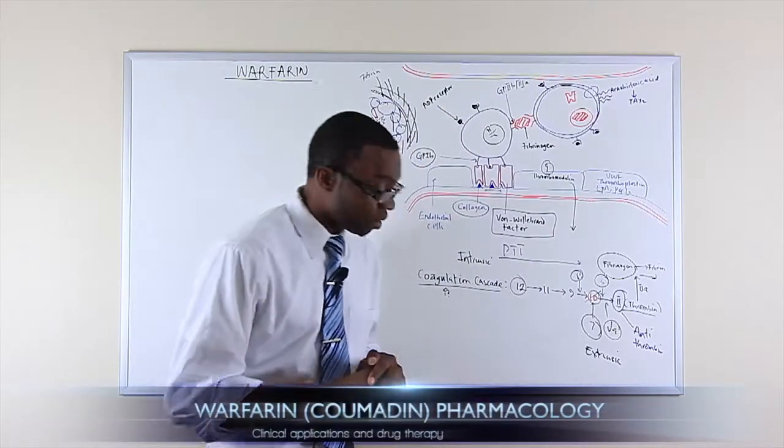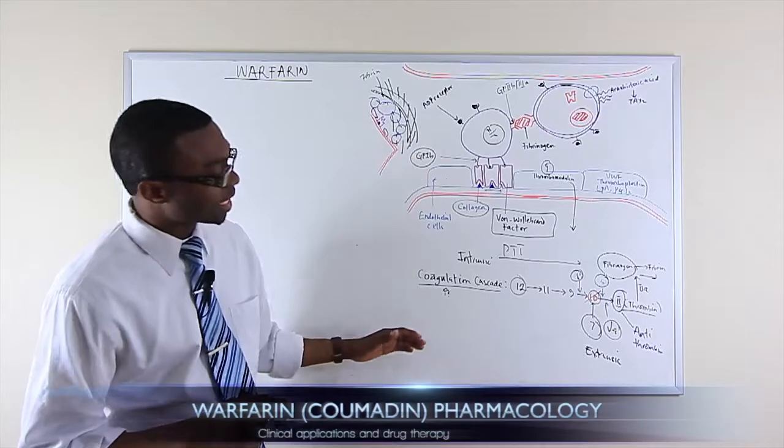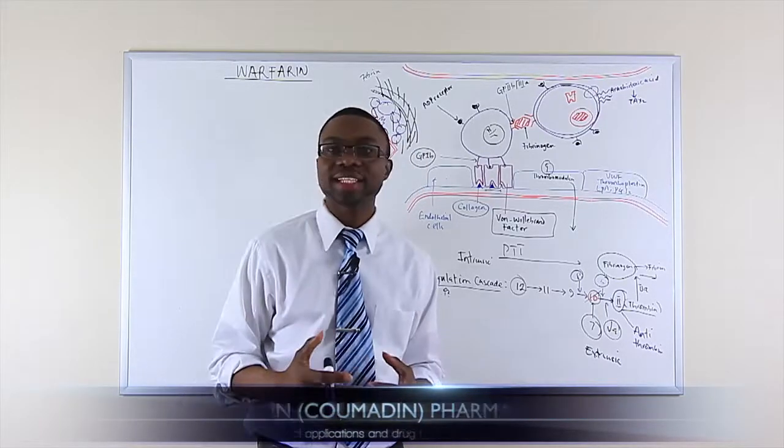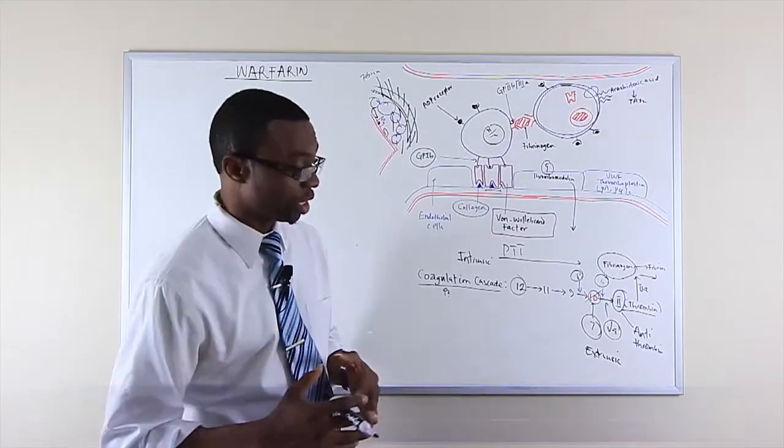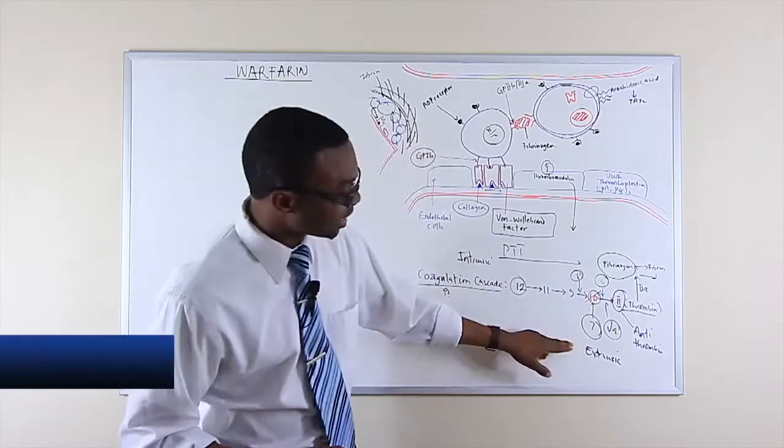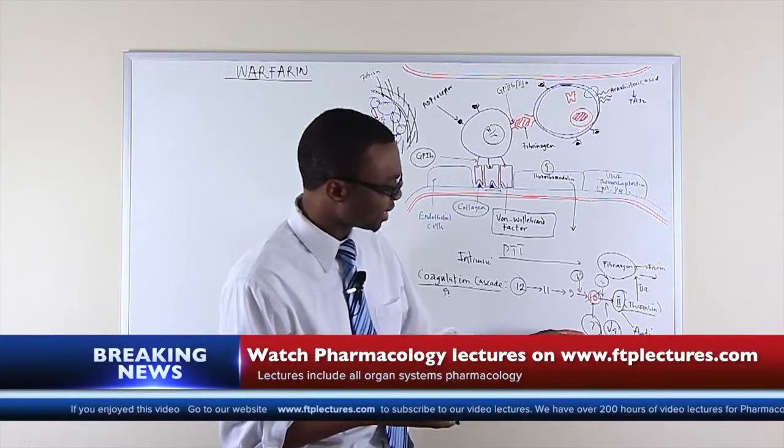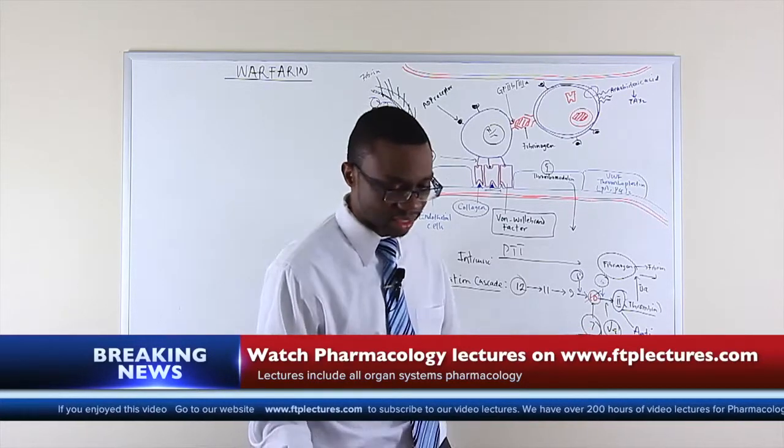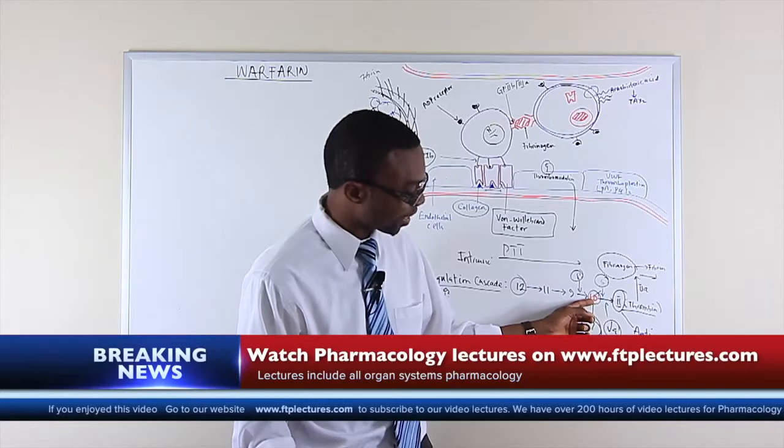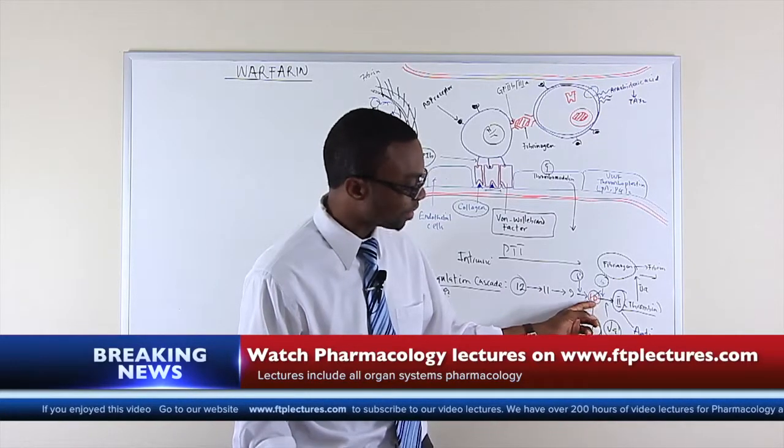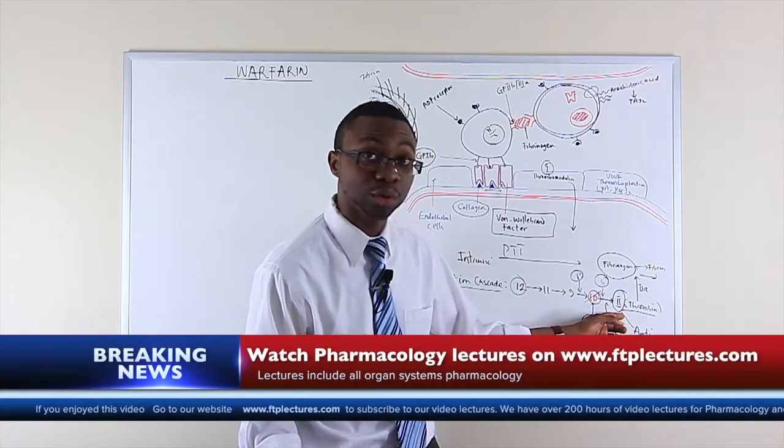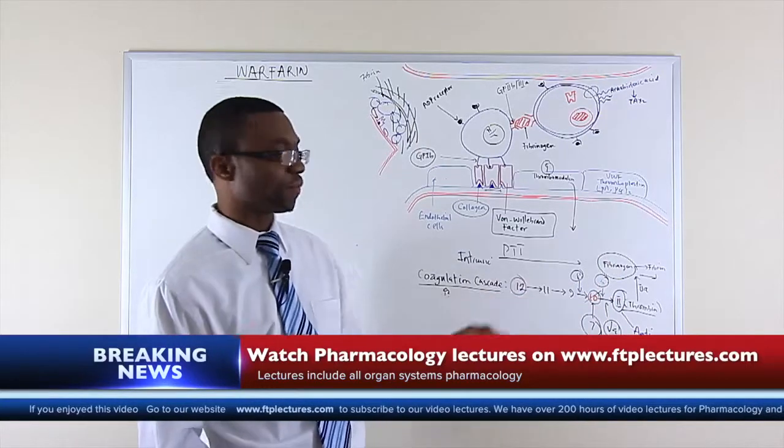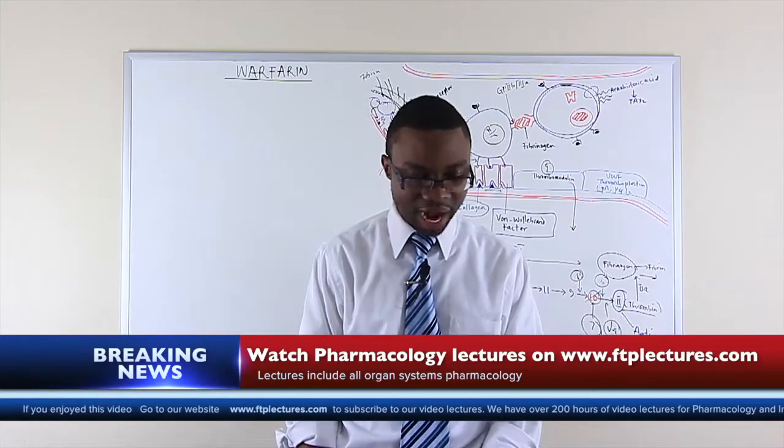Before we start talking about warfarin, let's take a look at the clotting cascade because this is where warfarin gets its bread and butter and does its job. As you can see here, there's an extrinsic pathway and the extrinsic pathway is very short. It basically takes tissue factor and factor 7, and factor 7 eventually is converted to factor 10 and 10a eventually converts to factor 2 which goes to 2a and then we form fibrinogen to fibrin.